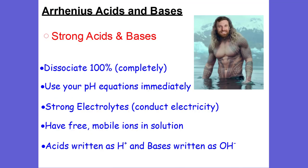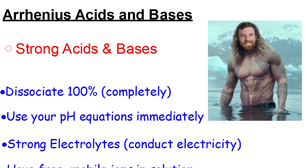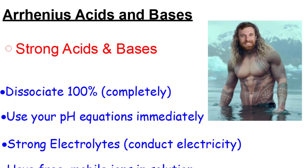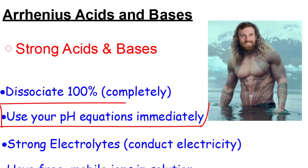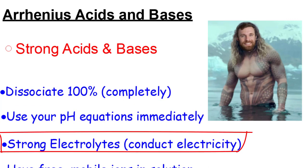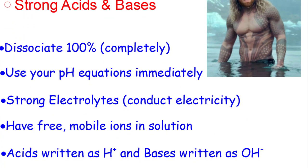Arrhenius Acids and Bases are really just talking about strong acids and strong bases. They're going to dissociate 100%, which means they're going to ionize, split up, and become positives and negatives completely. This means strong acids and strong bases are strong electrolytes, which means they're going to conduct electricity really, really well — because they dissociate 100% completely.